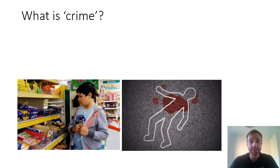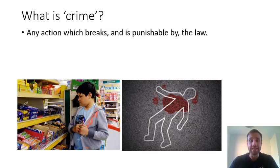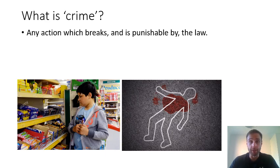So to start, let's look at what crime is. Crime, in its essence, is any action which breaks and is punishable by the law. So if you were to drive 50 miles an hour in a 30 mile an hour zone, you'd be committing a crime. If you were to shoplift, you're committing a crime. If you were to murder 100 people, you're committing quite a lot of crimes. Crime is any action which is punishable by law.